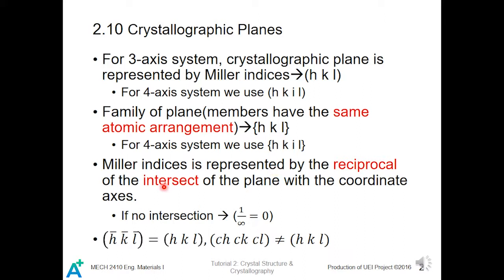Miller indexes are represented by the reciprocal of the intercept of the plane with the coordinate axis. If there is no intersection, we use zero, because it is 1 over infinity. For negative values of the same coordinate, h-bar, k-bar, l-bar is equivalent to h, k, l.